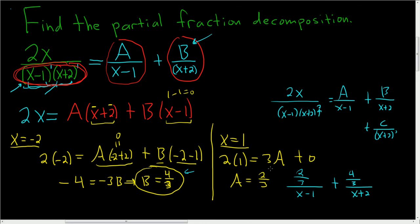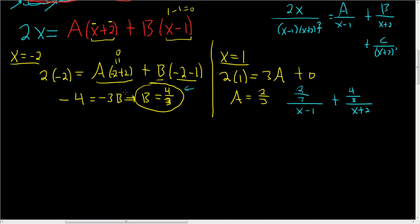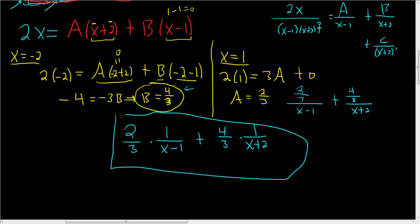I guess we could rewrite this to make it look a little better. So let's write it as 2 thirds times 1 over x minus 1, plus 4 thirds times 1 over x plus 2. This is usually the most useful way to write it later on when you actually use this in calculus. And so that is the final answer.